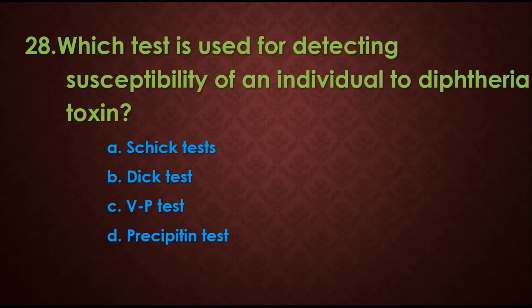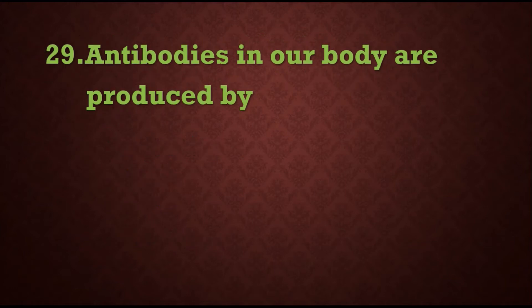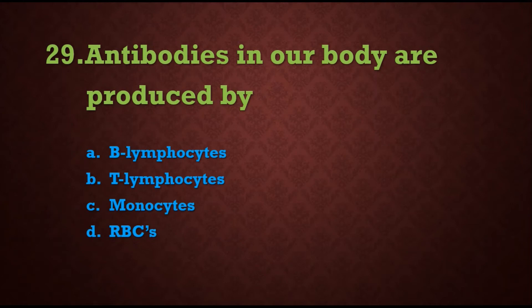Question 28: Which test is used for detecting susceptibility of an individual to diphtheria toxin? Options are: A) Schick test, B) Dick test, C) VP test, D) precipitation test. The answer is A) Schick test. Question 29: Antibodies in our body are produced by — options are: A) B lymphocytes, B) T lymphocytes, C) monocytes, D) RBCs.